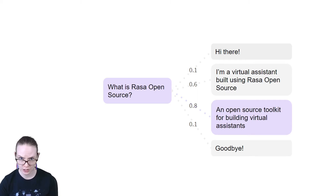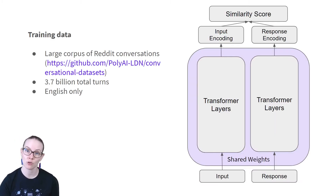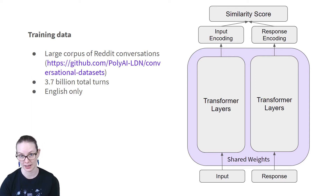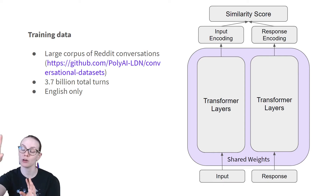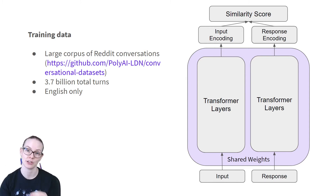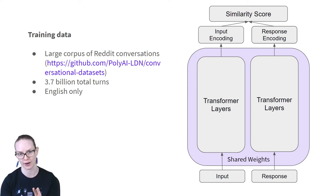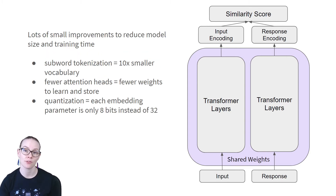How does ConveRT learn these scores? ConveRT was trained on a Reddit corpus, available on the PolyAI GitHub, with 3.7 billion total turns in English. This means a supervised learning paradigm: for a given input, we know the correct output, and we can also sample a variety of other possible responses, calculate the similarity scores between them, and over time learn to maximize the similarity score between the input and the correct response, and minimize it for incorrect responses.